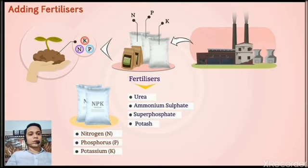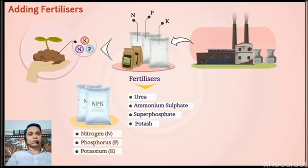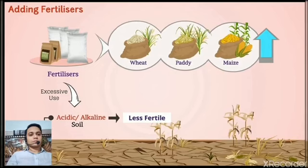Fertilizers are chemical substances which are rich in particular nutrients. How are they different from manure? Fertilizers are produced in factories. Some examples of fertilizers are urea, ammonium sulfate, superphosphate, potassium, and NPK. The use of fertilizer has helped farmers to get better yield of crops such as wheat, paddy, and maize.